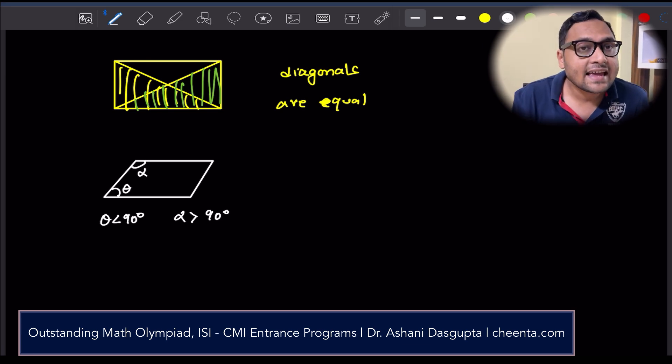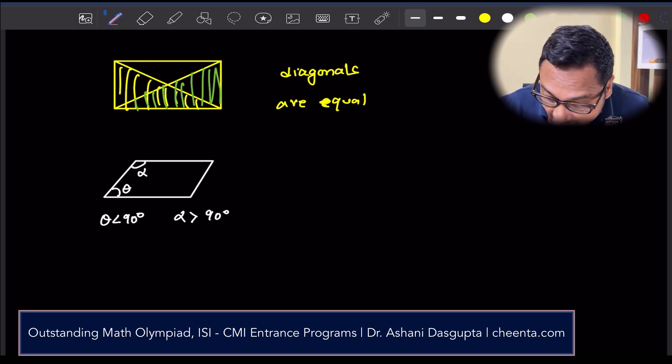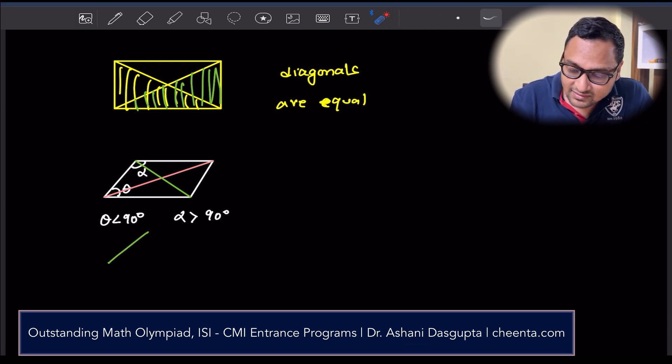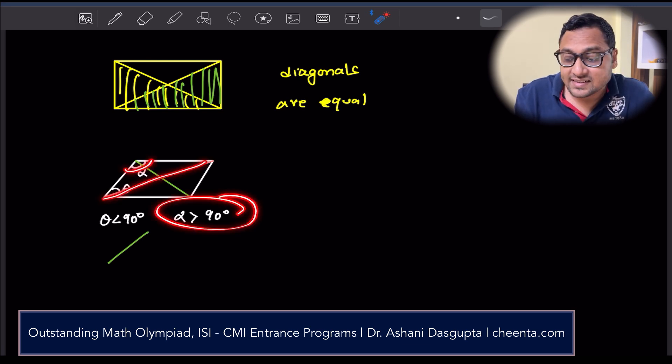What can you say about the diagonals of the parallelogram? Let me draw the diagonals. Clearly, one of them is larger and one of them is smaller. The simple fact is this. The diagonal opposite to the smaller angle is smaller. The diagonal opposite to the larger angle is larger.